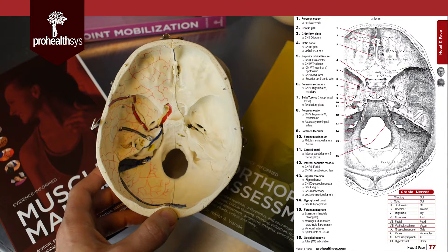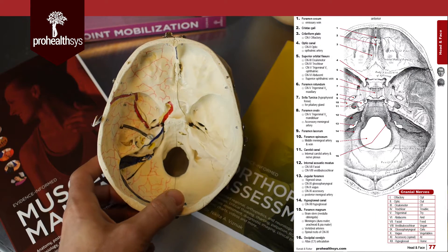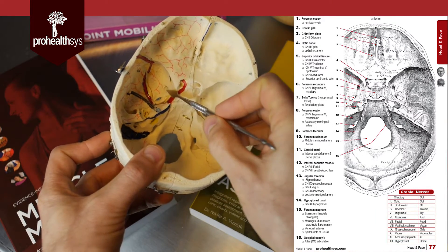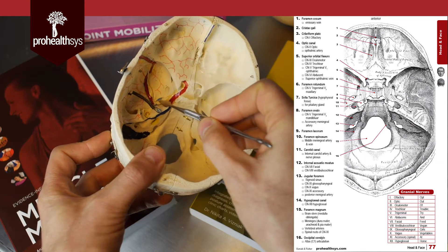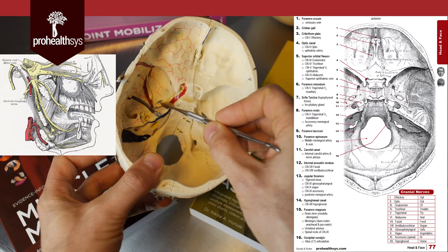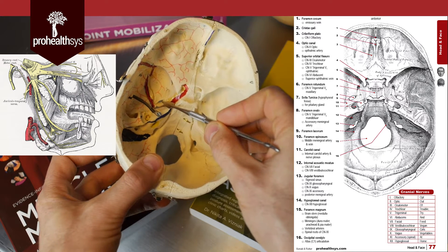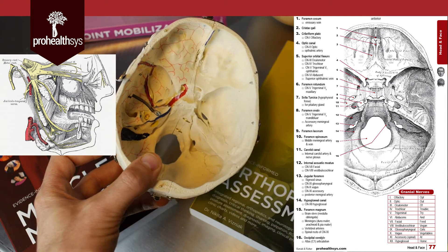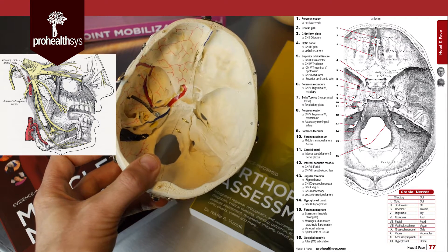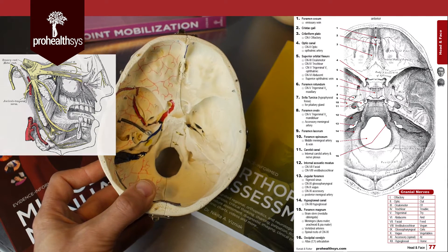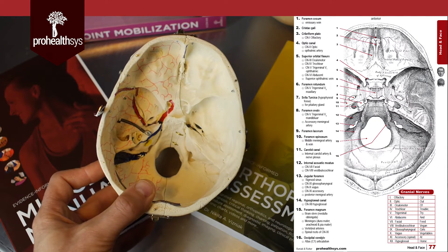The next structure is the foramen ovale — ovale means oval-shaped. What goes through the foramen ovale is the trigeminal nerve, but this time the third branch, the mandibular branch. The accessory meningeal artery may also run through there — there's some anatomical variation seen on cadaver dissections — but the main structure to remember is the trigeminal nerve V3 branch through the foramen ovale.